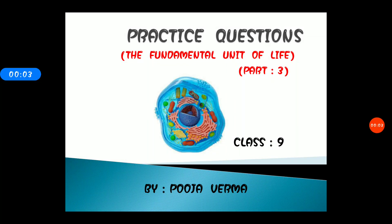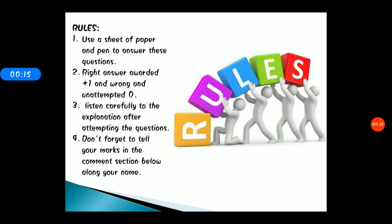Good morning students. This is another video on practice questions, MCQ type, on the chapter 'The Fundamental Unit of Life,' Part 3 for Class 9, presented by Pooja Varma. Before we start, you need to use a sheet of paper and pen while answering. Mark the right answer as plus one, wrong or unattempted as zero — no negative marking. Listen carefully to the explanations, and don't forget to share your marks in the comment section below along with your name.